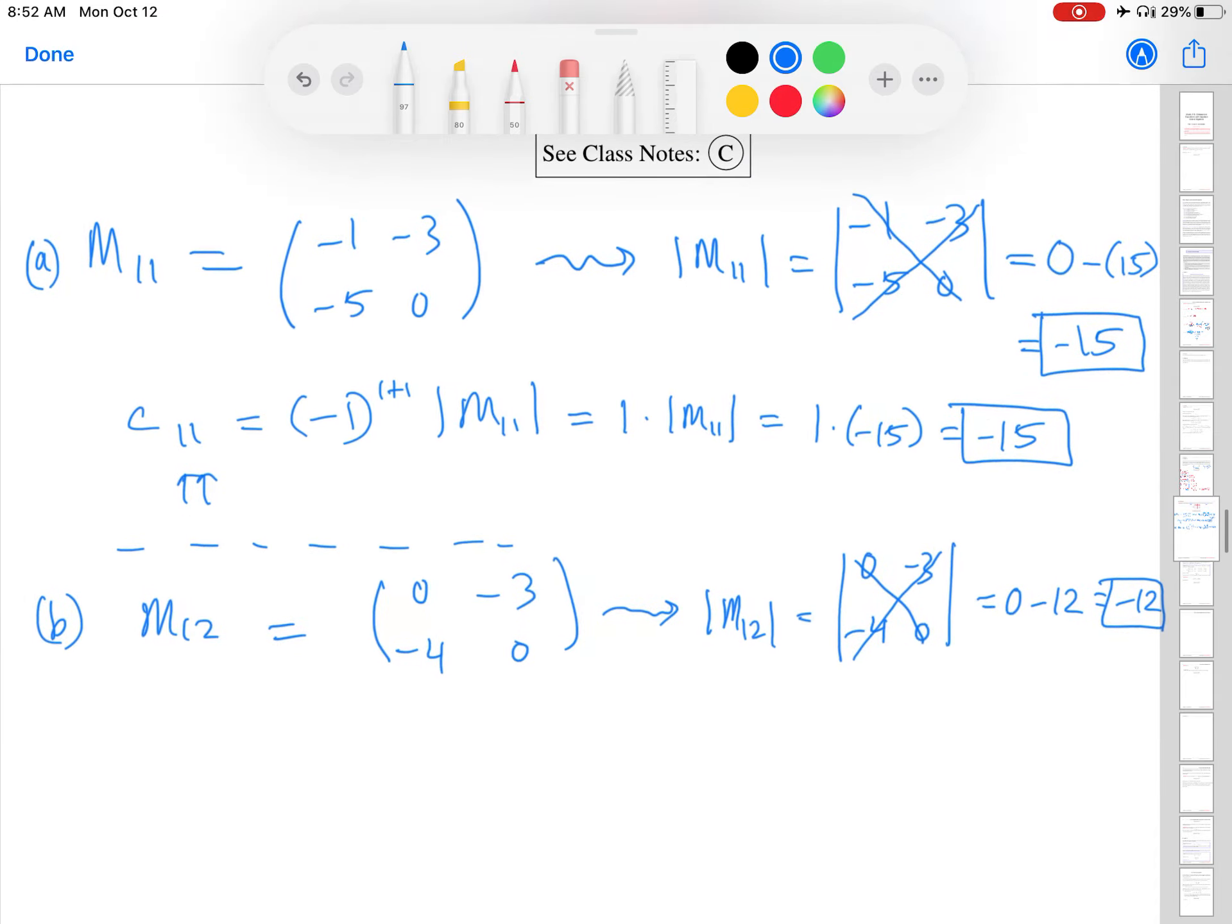And then to find the cofactor, I'm finding the 1,2 cofactor. So negative 1 to the 1 plus 2 times the minor. So negative 1 cubed, that's negative 1, times the 1,2 minor, which was negative 12. So negative 1 times negative 12 is 12.